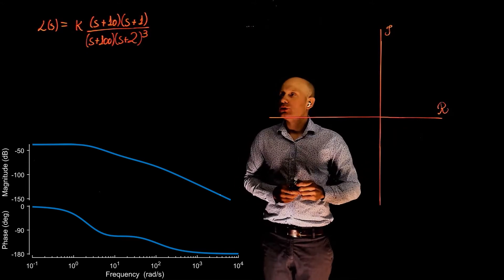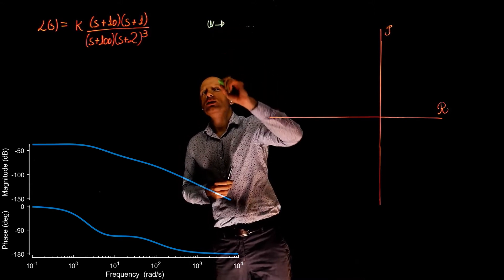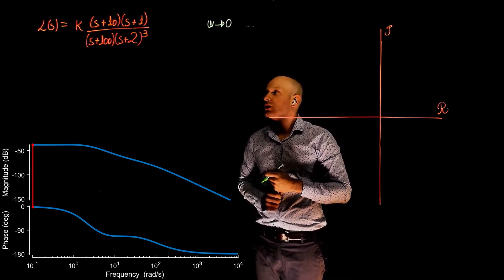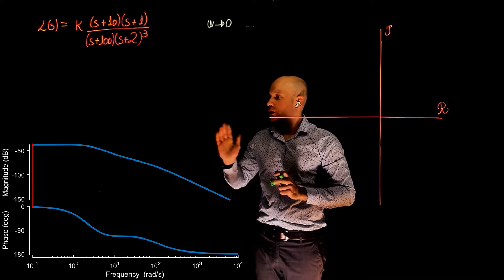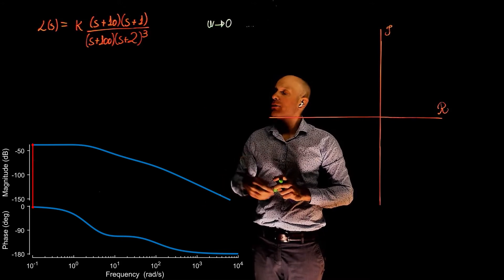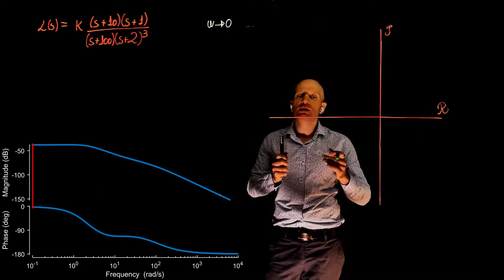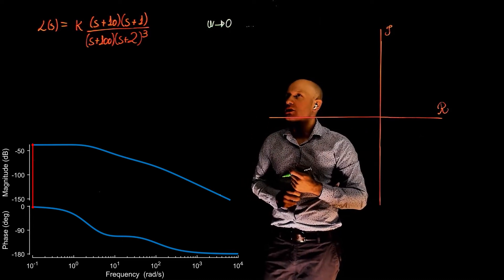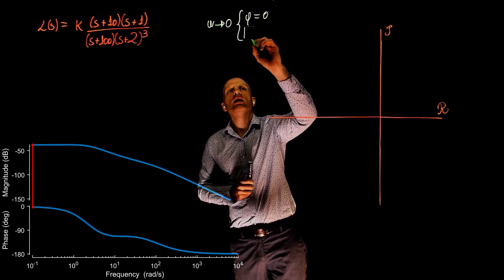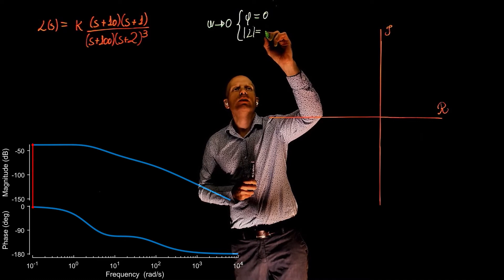We can look at the strategic points in order to draw this Nyquist plot. The first one is when the frequency tends to zero. When the frequency tends to zero, we can see that the Bode plot has a magnitude that is less than 1. The phase tends to zero, and if you look at the magnitude of the transfer function, we can see that the magnitude is a negative value in decibels. This means that the actual magnitude of the transfer function is less than 1. So for omega tending to zero, we have a phase of zero and a magnitude that tends to something smaller than 1.